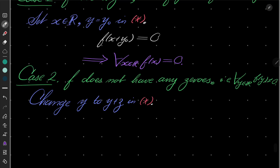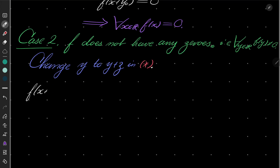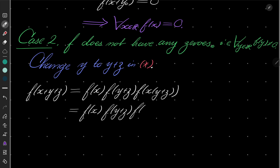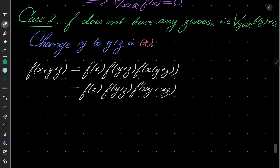We have now the following. On the left-hand side, we have f(x + y + z). And on the right-hand side, we have f(x) · f(y + z) · f(x(y + z)). And now I will use my condition asterisk two more times.